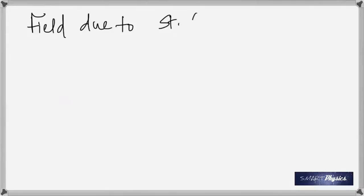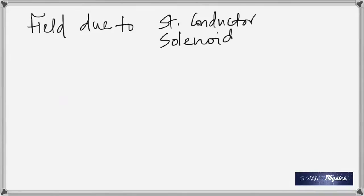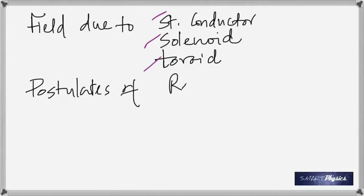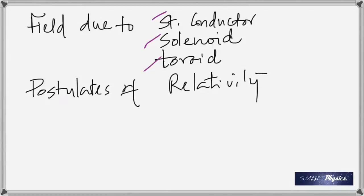Additional concept topics include the magnetic field due to a straight conductor, a solenoid, and a toroid. Also study the postulates of the special theory of relativity and all relativity concepts — there are 14 points from relativity alone: two problems and two concept questions. Take today's quiz; the answers will be posted by the time you get home.